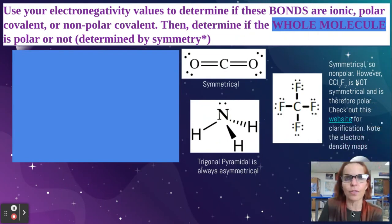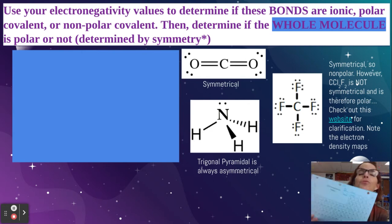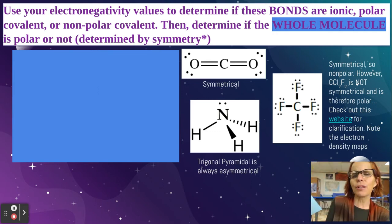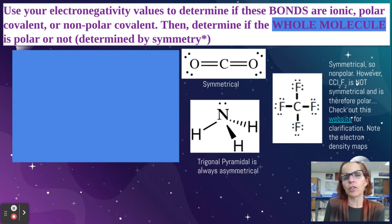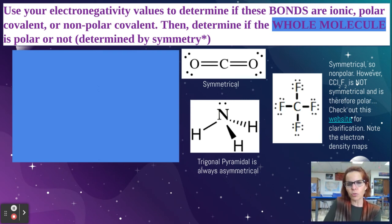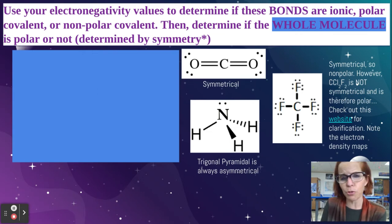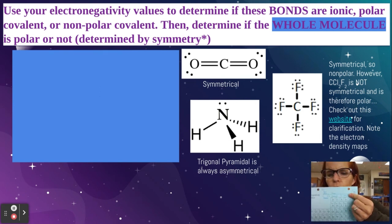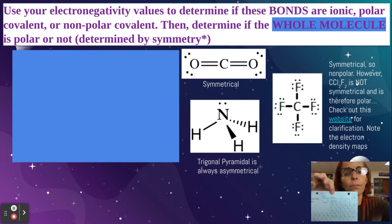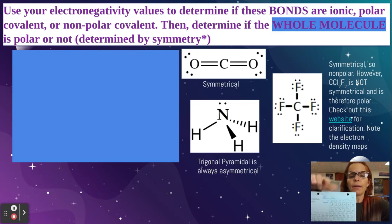This is arguably the most complicated page of what we're going to be doing. It says: using your electronegativity values to determine if these bonds are ionic, polar covalent, or nonpolar covalent, and then determine if the whole molecule is polar or not. Let's look at carbon and oxygen first. Carbon is 2.5 and oxygen is 3.5. So 3.5 minus 2.5 — the difference is 1.0, and 1 falls right in the middle of polar. So the carbon-oxygen bond is polar.